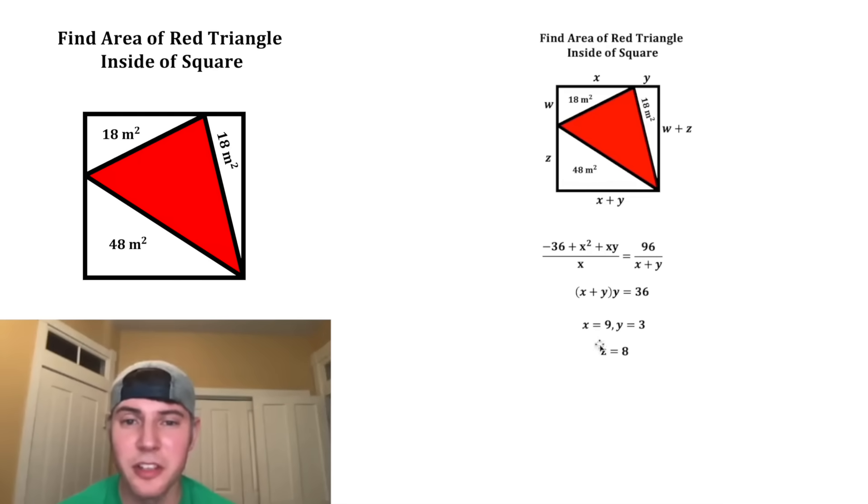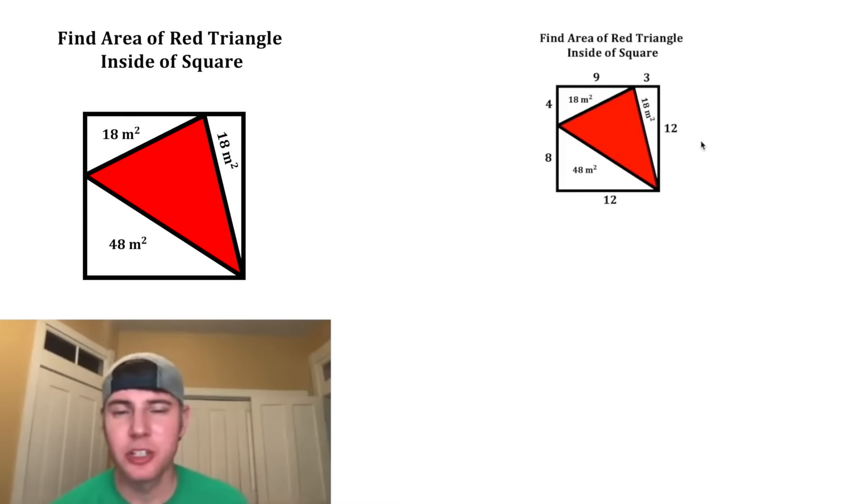So now that we have three of the solutions, we plug in 9 for this x and 3 for this y. You can see that the side length of the square is equal to 12, so that means this one's also 12. And then we can plug in 9 for this x, 3 for this y, and 8 for this z. And since this is 8 and we know the whole side is 12, we also know that w is equal to 4. So we found a solution that works. And based on our graphs, I suspect it's the only one.